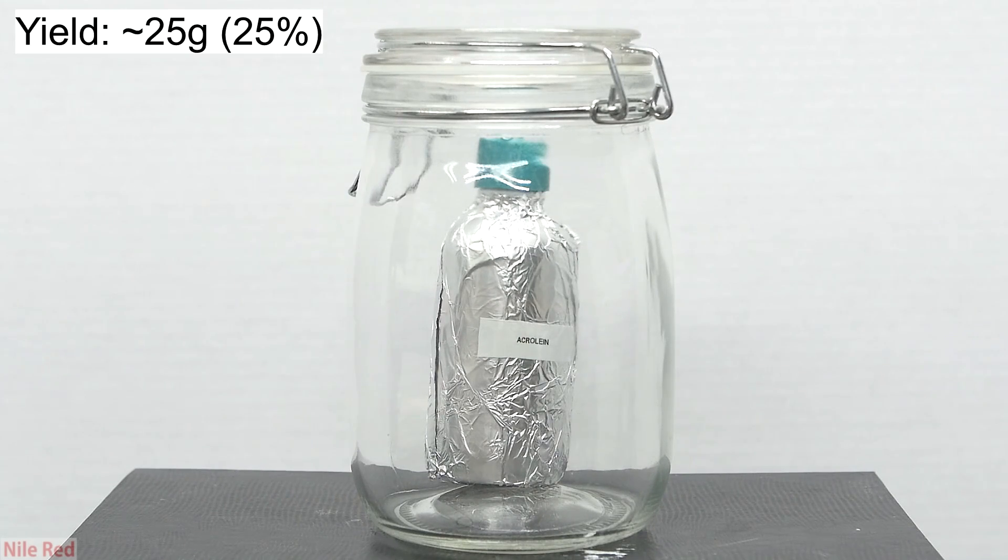The final yield that I got was about 25g, which corresponds to a percent yield of about 25%. The procedures that I was following did this on a much larger scale, and their yields varied between 30 and 50%. Considering this was done on a small scale, I think the yield is okay, and in the end I got way more than I actually need.